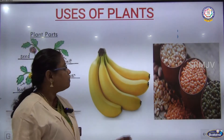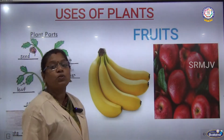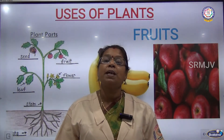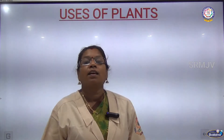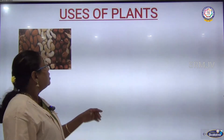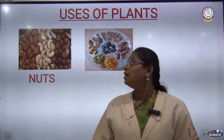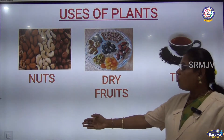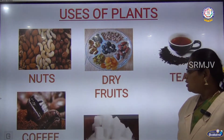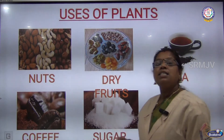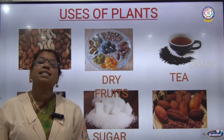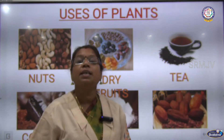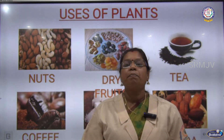We eat fruits like bananas and apples. Plants also give us nuts, dry fruits, tea, coffee, sugar and cocoa.